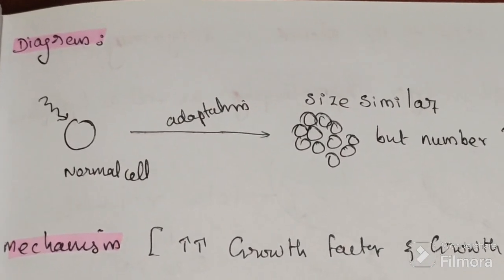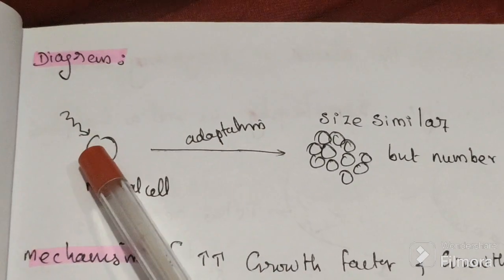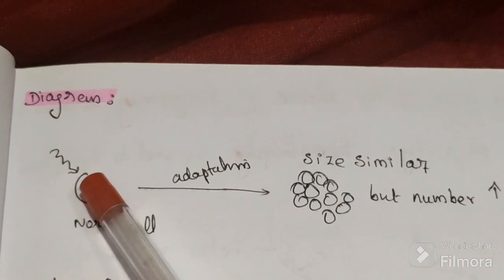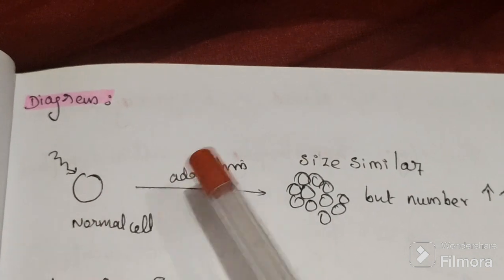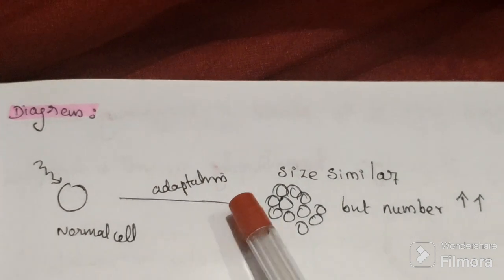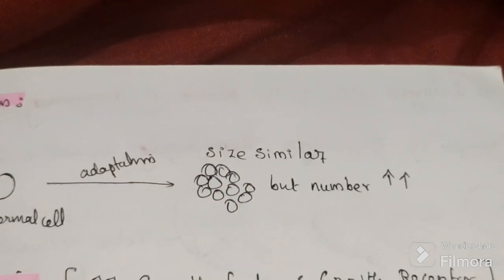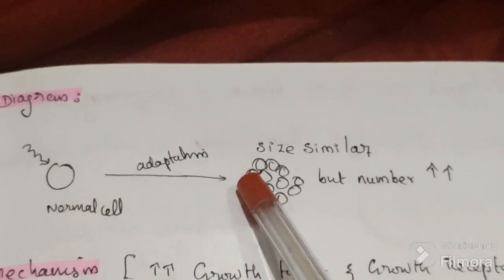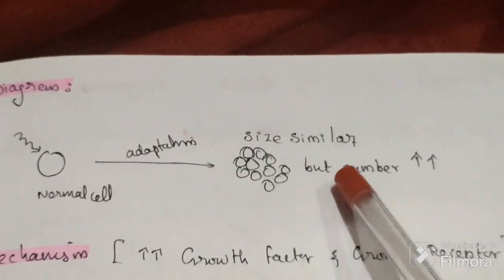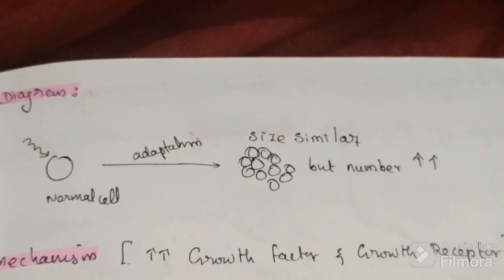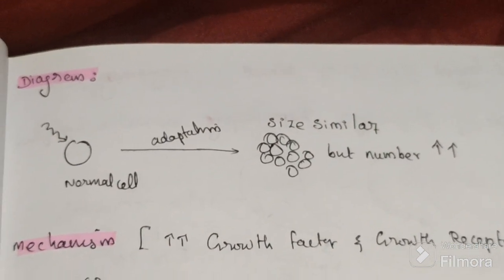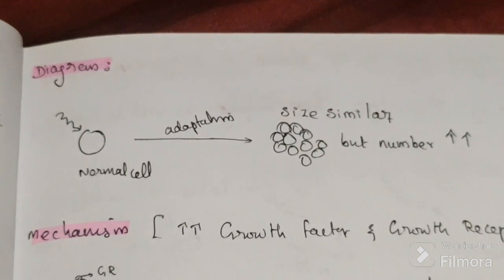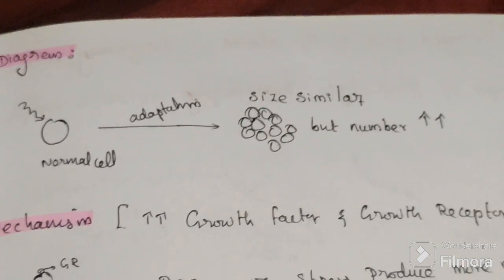Looking at the diagram for hyperplasia: this is the normal cell. When stress comes — physiological or pathological — adaptation takes place. Here, size remains similar but number increases. Cell size stays the same, only the number increases. Whenever stress comes, the cell adapts by increasing in number.